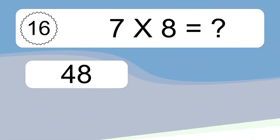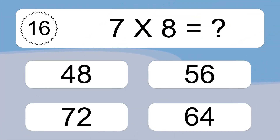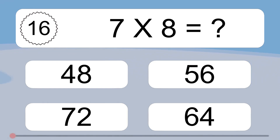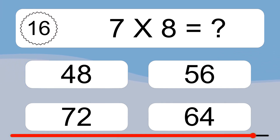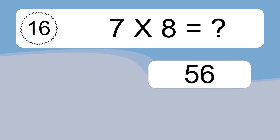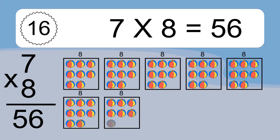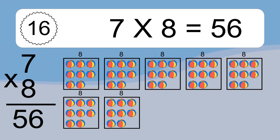Seven times eight equals what? Seven times eight equals 56. We have seven boxes, and each box has eight colorful balls inside. If you count all the balls in all the boxes together, you will have seven times eight balls. This equals 56 balls.